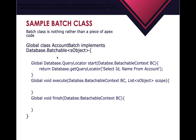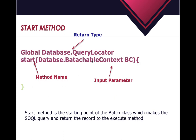We have three methods defined under the batchable interface and we have to provide implementation for all of them. The start method has two kinds of return type: either Query Locator or Iterator. It takes the database.batchableContext parameter, executes the query, and returns the records to the execute method via the second parameter - scope. The finish method contains exit logic. You can also add your own methods and constructors inside a batch class.